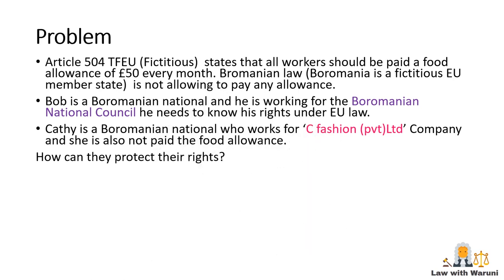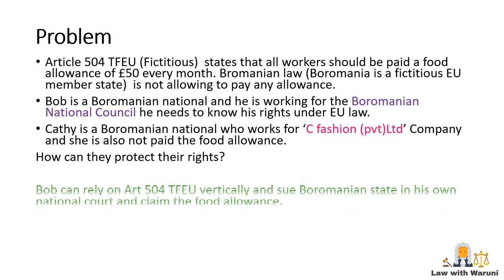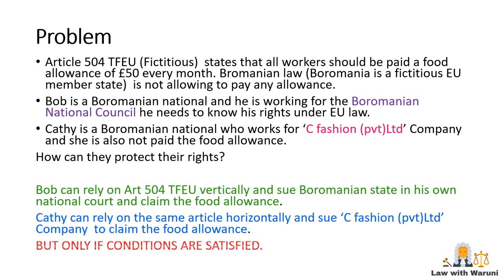Now we will try to apply what we have learned to a problem. I have given a fictional scenario here. We must see how Bob and Cathy could protect their rights. Since Bob is working for a Romanian National Council, he has to go against the state — that means vertically. Cathy is working for a private company, so she has to go against it horizontally. However, both Cathy and Bob can rely on EU law only if Article 504 TFEU satisfies the Van Gend criteria — that means Article 504 TFEU should be clear and precise, unconditional, and need not be implemented nationally to be effective.